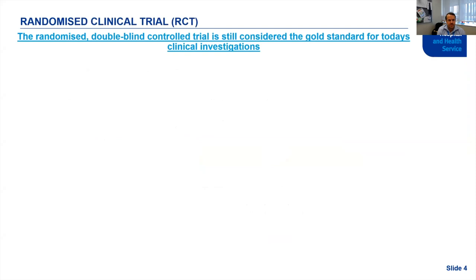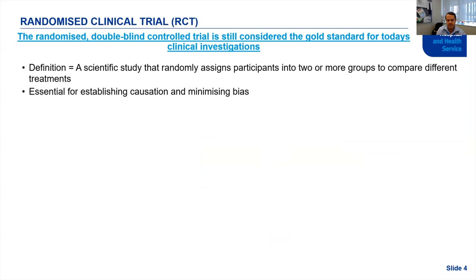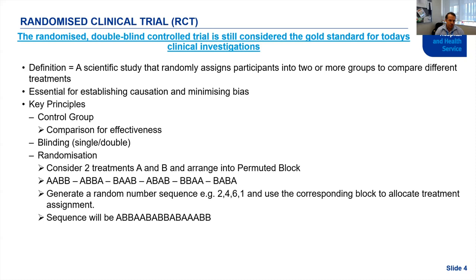The RCT is still considered today the gold standard for clinical investigations. So what is an RCT? Essentially, it is a study that randomly assigns participants into two or more groups to compare treatments. RCTs are considered essential because they establish causation and minimize biases. The key principles include control groups and blinding — single or double — which I won't go into in too much detail.